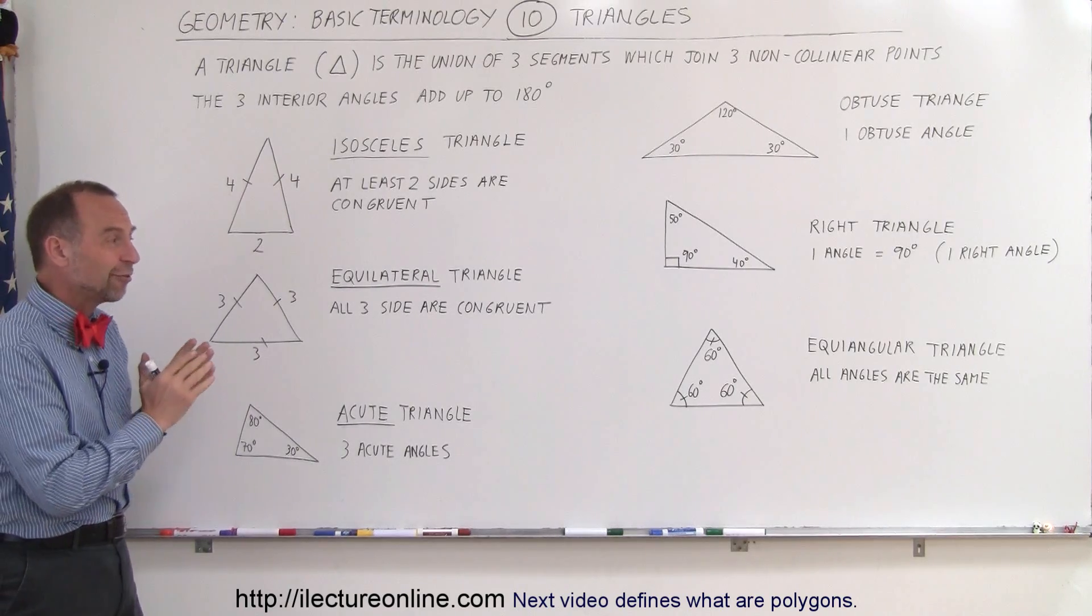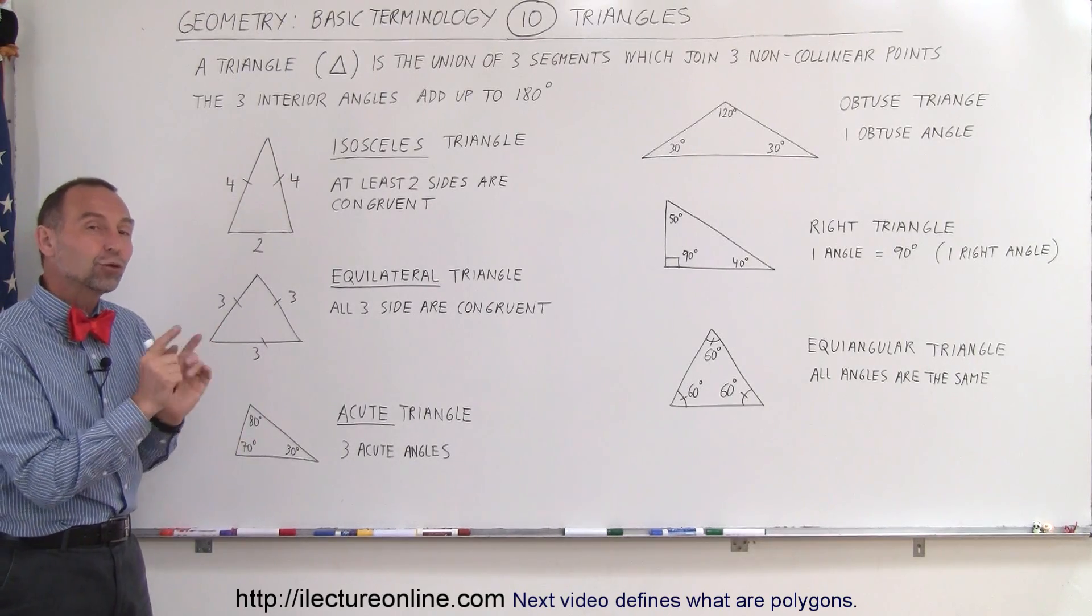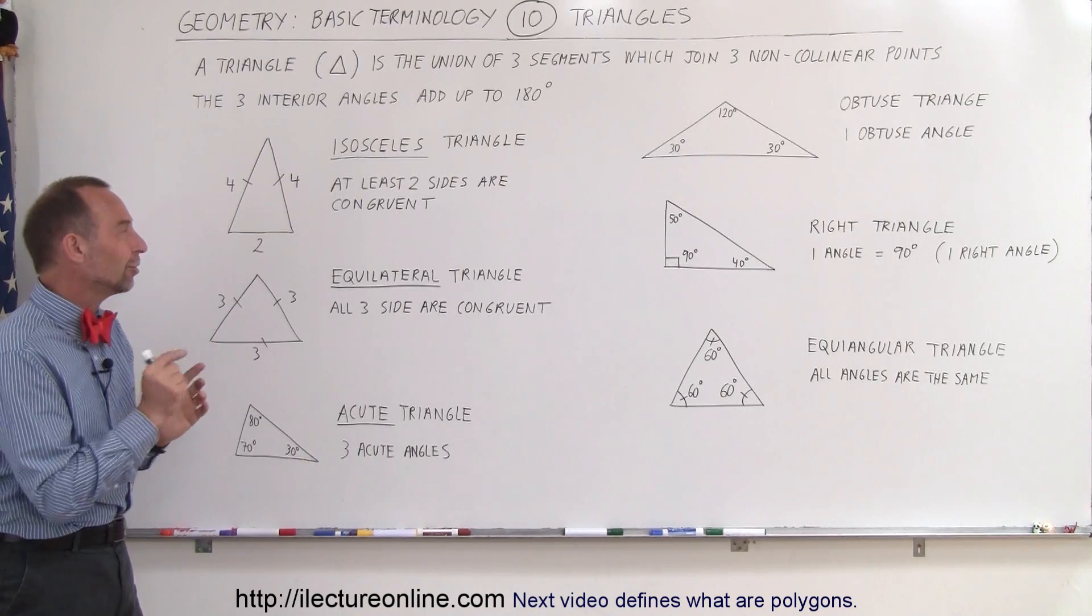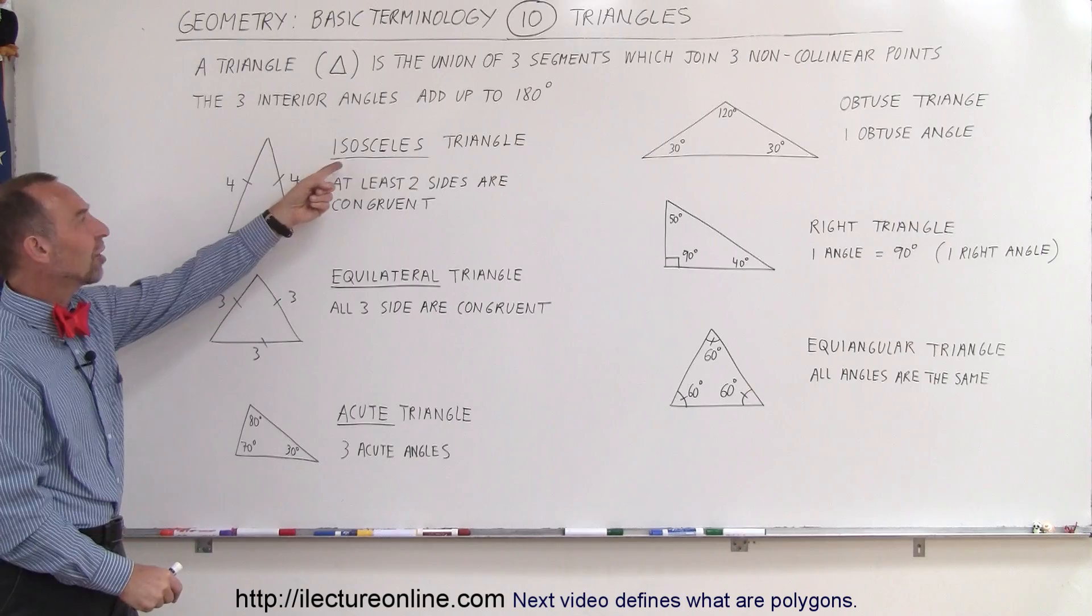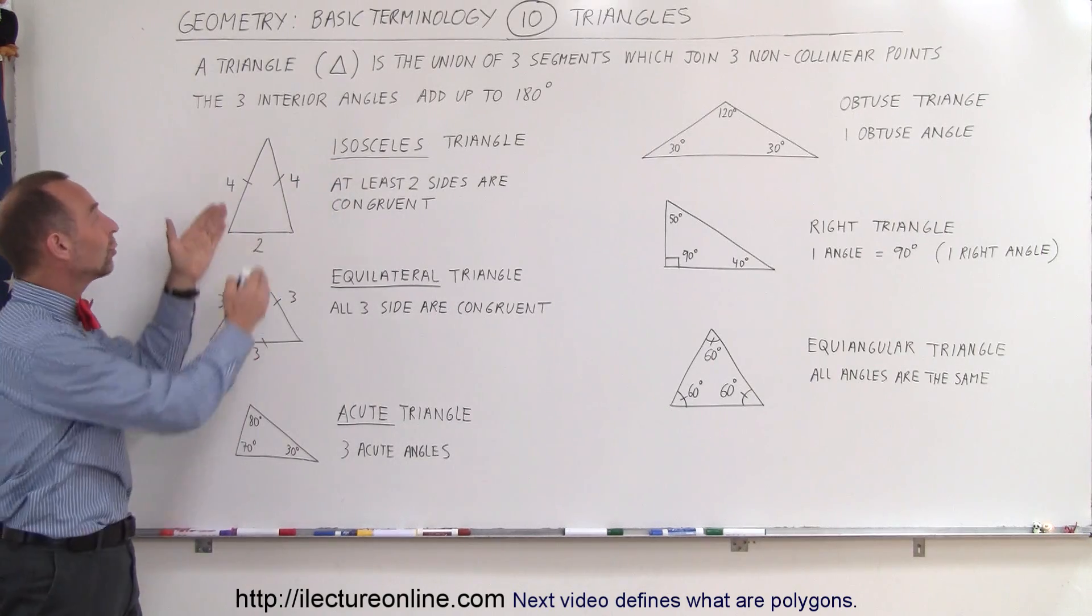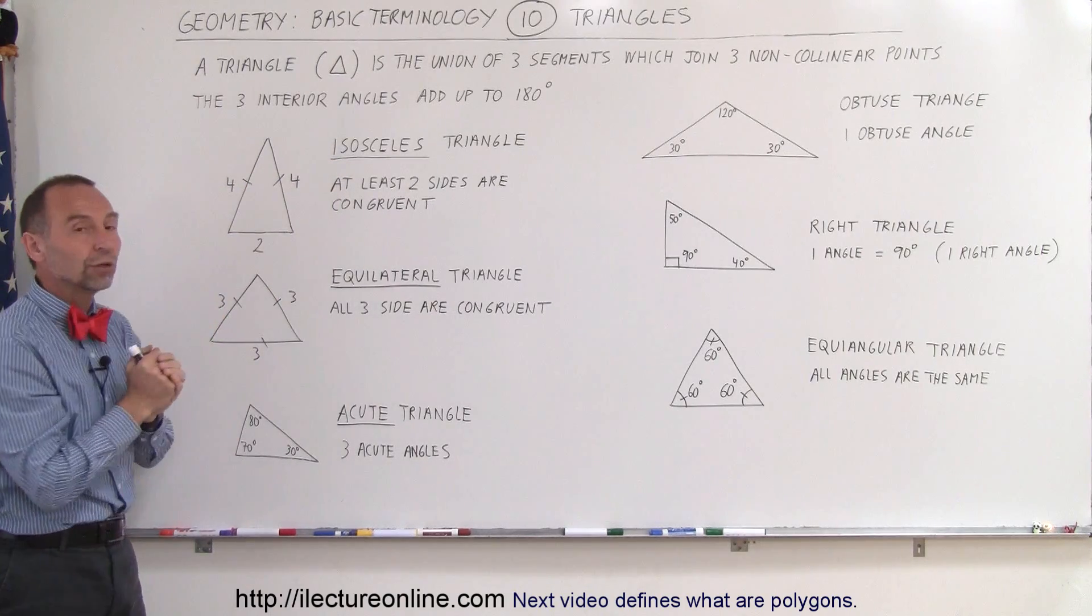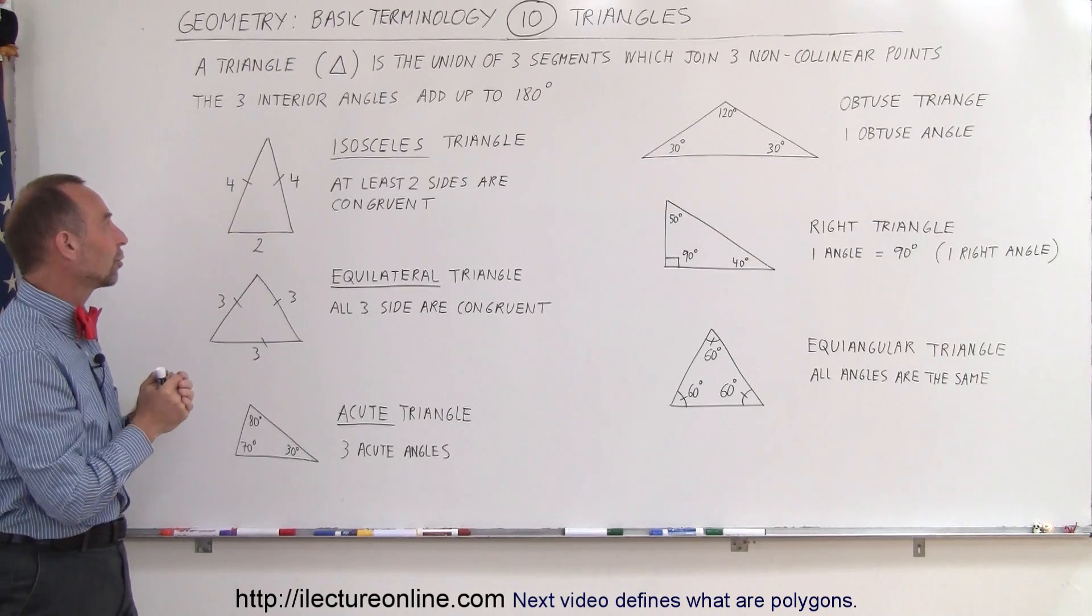The different types of triangles - we have five different types of triangles here, but two are the same with two different names and you'll see in just a moment why. The five different types are the isosceles triangle, which means two of the sides are congruent or the same length. That's what congruent means.